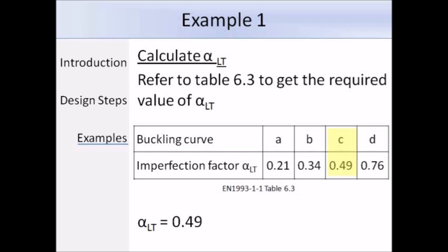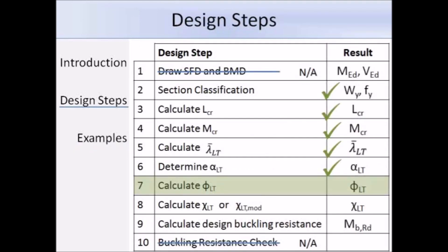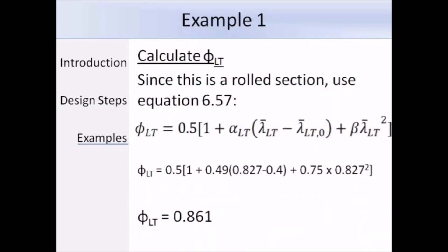Now for Buckling Curve C, the corresponding value of alpha LT from table 6.3 is 0.49. Now we need to work out phi LT. So we're dealing with a rolled section, and we're using the special case. So this is the equation we need to use, and the UK National Annex recommends that we use values of 0.75 and 0.4 for beta and lambda bar LT0 respectively. We already have the values of the other terms, so substitute in the values, phi LT works out as 0.861.